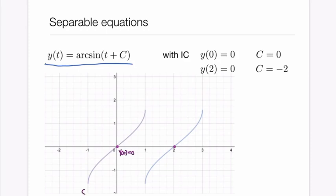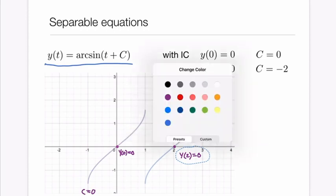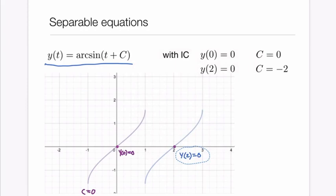And then here we have an initial condition. We want y of two to be equal to zero. And that required when you plug in two here and zero here, that gives you a C value of minus two. So then the C value here is C equal minus two.